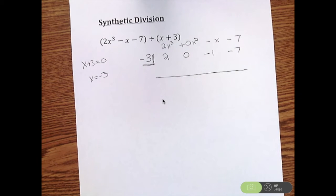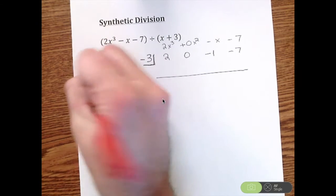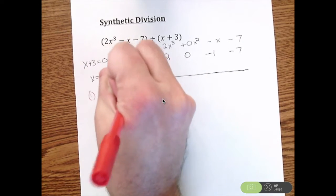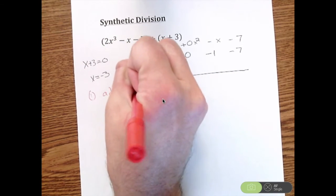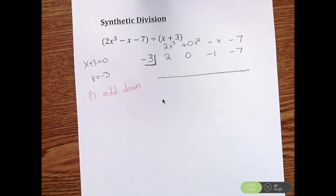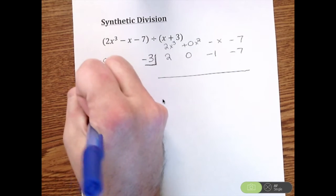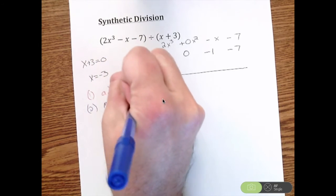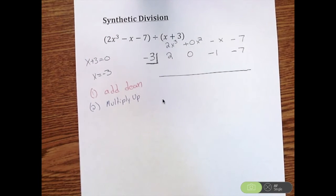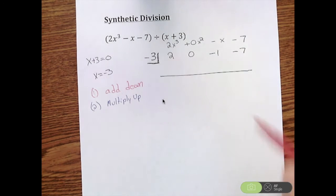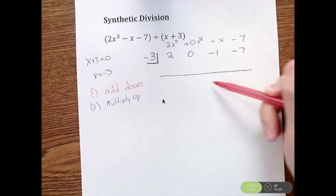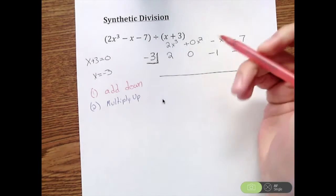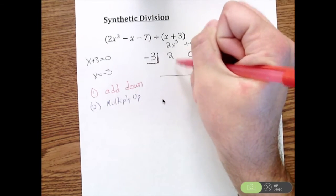There's two important things to remember with synthetic division on how to do this. The first is remember that we're going to add down, and then the second we're going to multiply up. So anytime we're going to work out, we're going to find a whole list of numbers here.